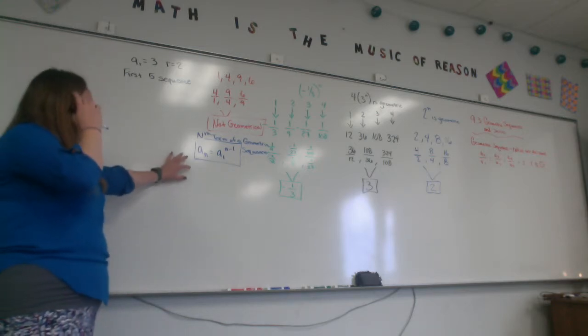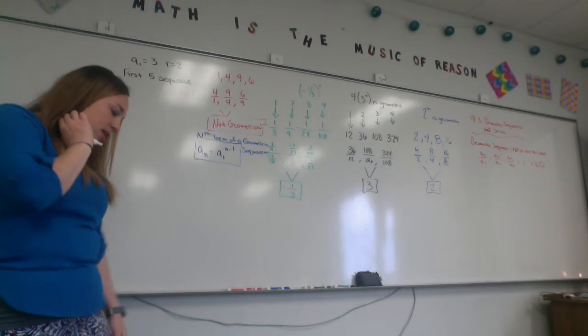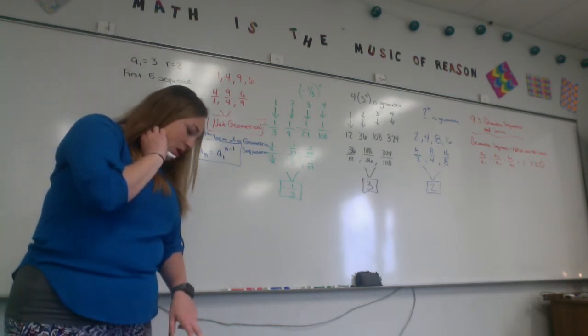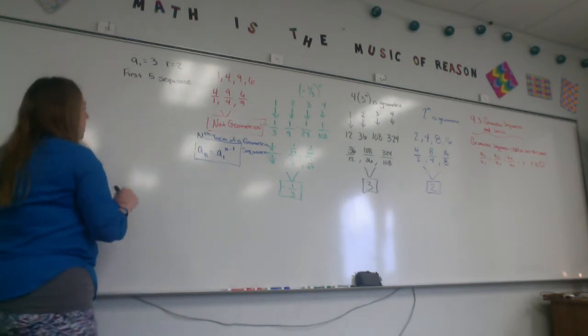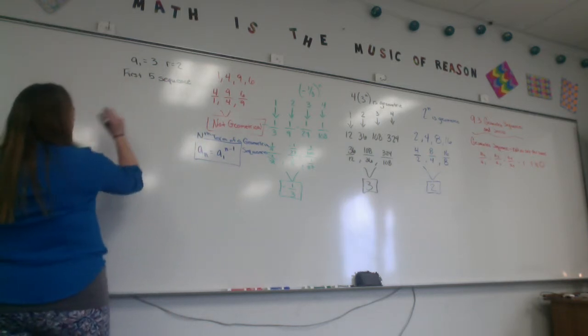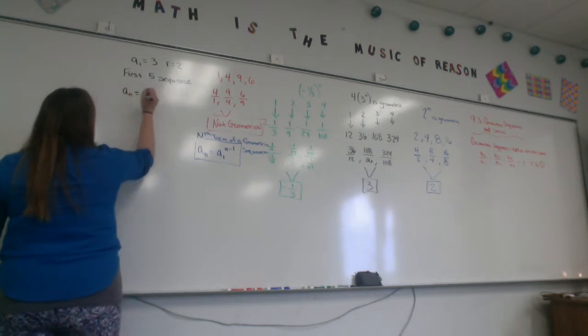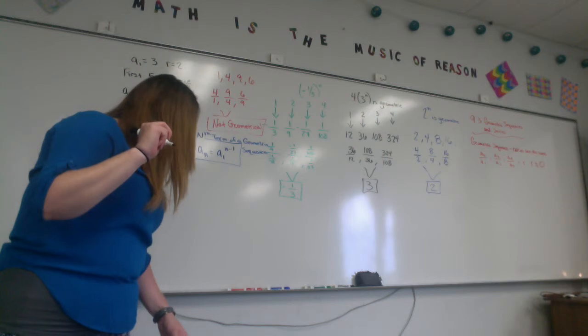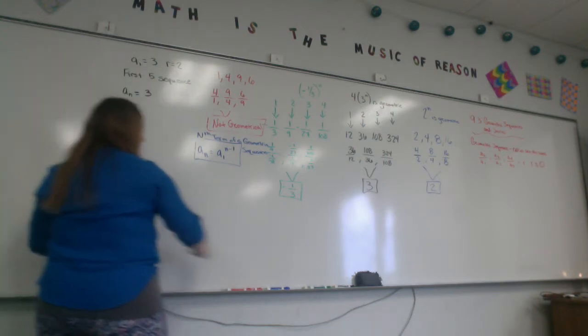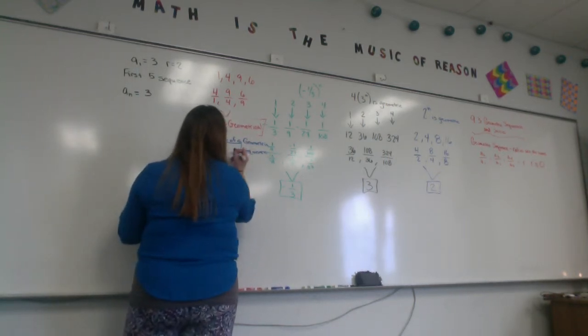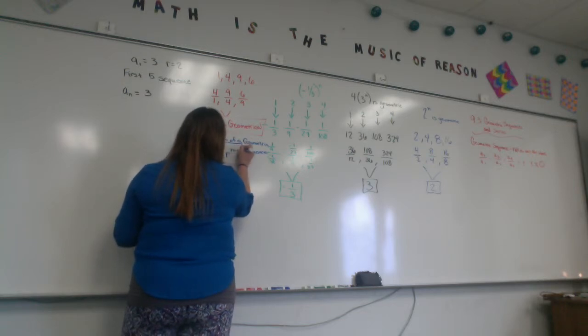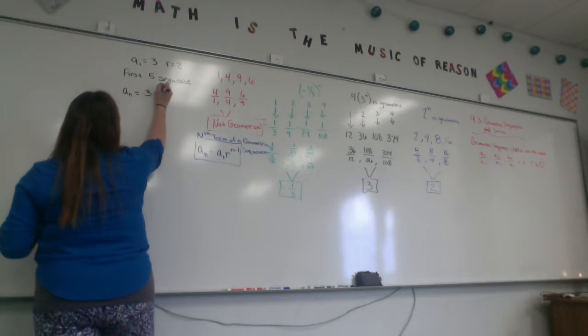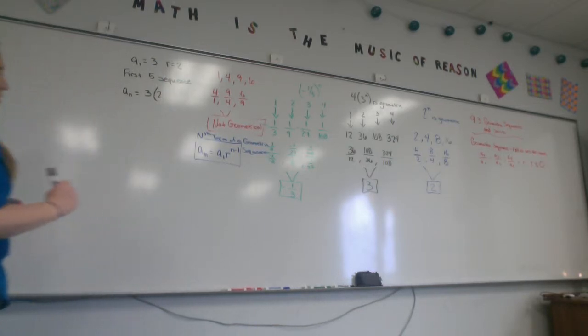So you want to use this right here? a of n equals a1 times r to the n minus 1. So a1 in this case is what number? 3. So, it's a n equals 3. What is my ratio? 2. My ratio is going to go right here. Ratio to the n minus 1. My ratio is going to plug in here in this case because I know what it is. So, 2 to the n minus 1.